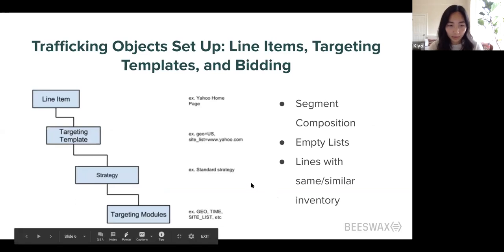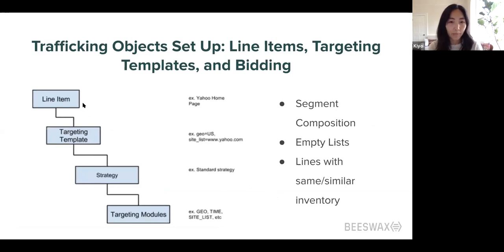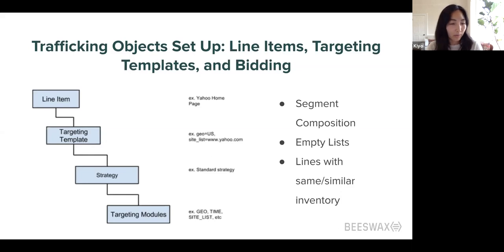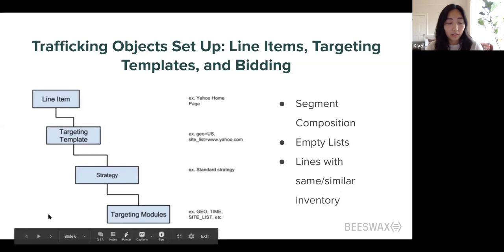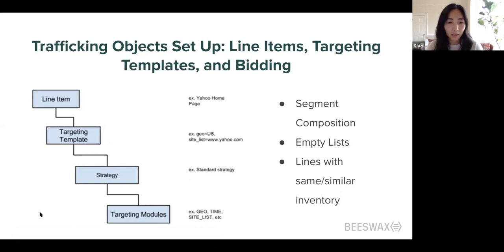Digging a bit deeper into the line item setup itself — you'll see line items as your tactics within each campaign, targeting templates with specific targeting keys like inventory, geo set to US, placement type video, or site/app bundle lists, and then strategy, which covers out-of-the-box bidding strategies like flat CPM bidding, CPC with pacing, or PCR. What you want to double-check here is the targeting template section, making sure all of your targeting will have inventory and match the line item targeting in general.